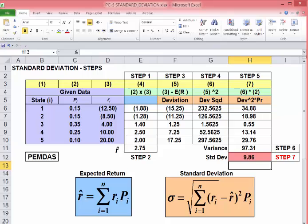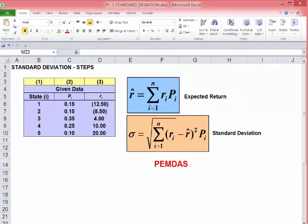Following the order of operations hierarchy, especially in the standard deviation equation, is critical to finding the correct result. We've worked our way through expected return and standard deviation step by step and we've gone through an example.